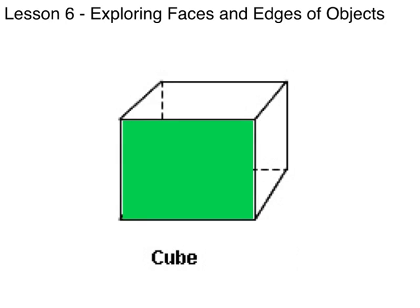Welcome to Lesson 6: Exploring Faces and Edges of Objects. Here, of course, we are looking at a cube. Let's review a few terms. Any flat side of a three-dimensional object, such as a cube, is called a face. We remember that a cube has six faces.